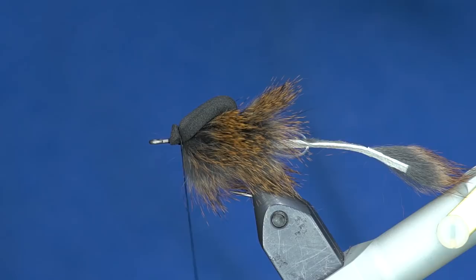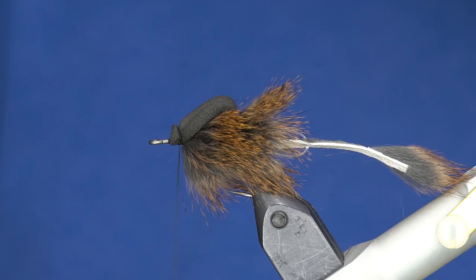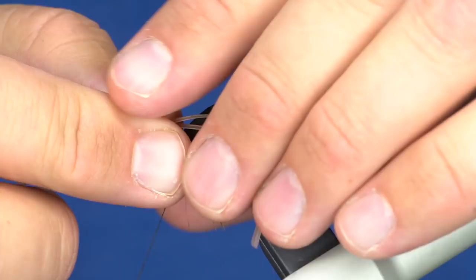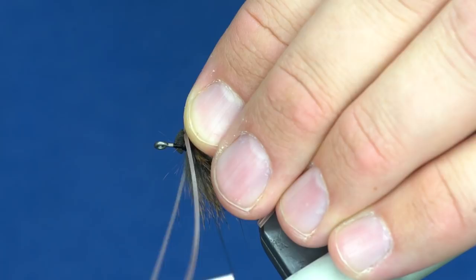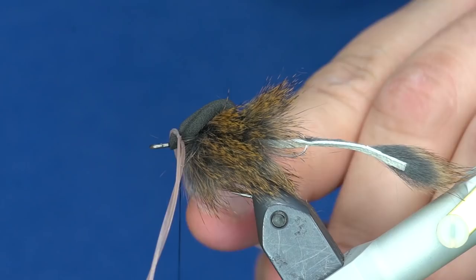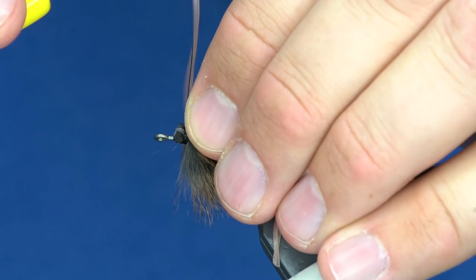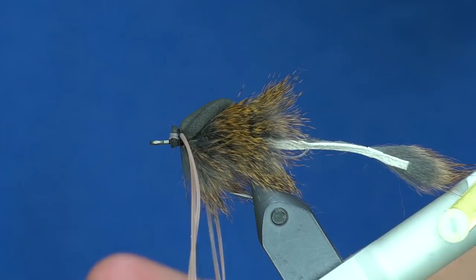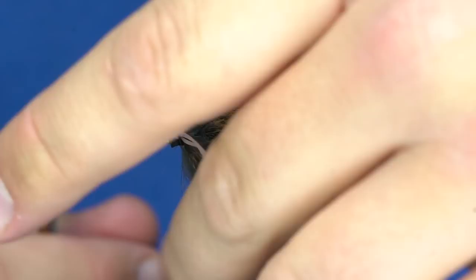When I cut it, I usually leave a little tab of foam like that so I can tie the legs in. On the Mousy McMouse Face we tied little knots in the rubber legs, but this one we're just going to tie in some flutter legs. I leave that foam tab there to guide me as to where I need to tie those in. I like to trim them so that they're about where that loop is.